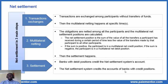After transaction exchanges, we move to the second step: the multilateral clearing or netting. In the second step, the obligations are netted among all the participants and the multilateral net settlement positions are calculated. The net settlement position is the sum of amounts of all the transfers a participant has received during a certain period of time, less the value of transfers made by that participant to all other participants. If the sum is positive, the participant is in a multilateral net credit position — it is also said the position is long. And if the sum is negative, the participant is in a multilateral net debit position — it is also said that the position is short.